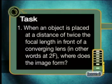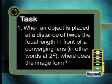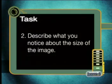What will happen if the object is moved closer to the lens? You'll have to join us for the next lesson to find out. In the meantime, try today's task: when an object is placed at a distance of twice the focal length (2F) in front of a converging lens, where does the image form, and what do you notice about its size? I trust you enjoyed this lesson — see you next time.